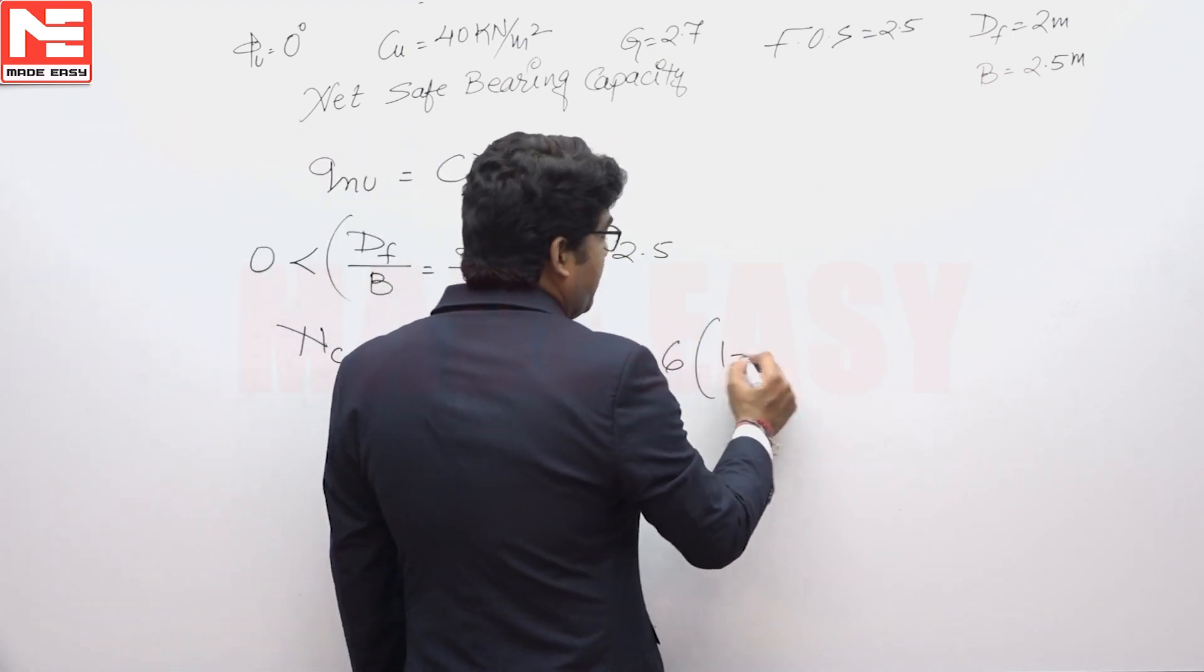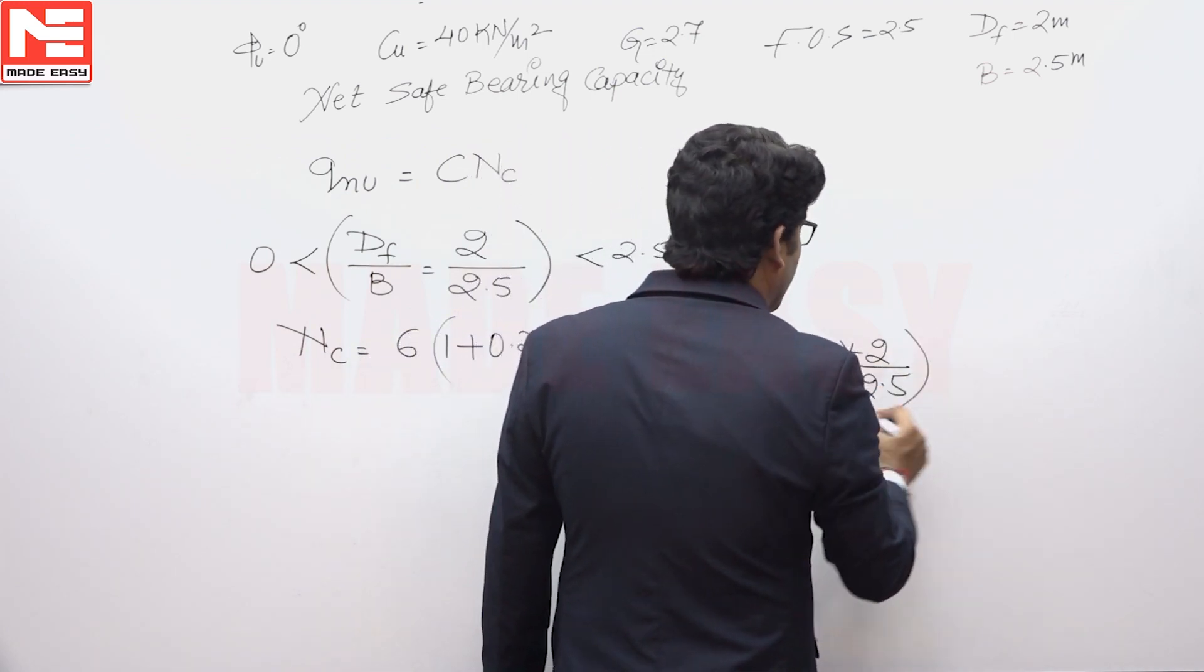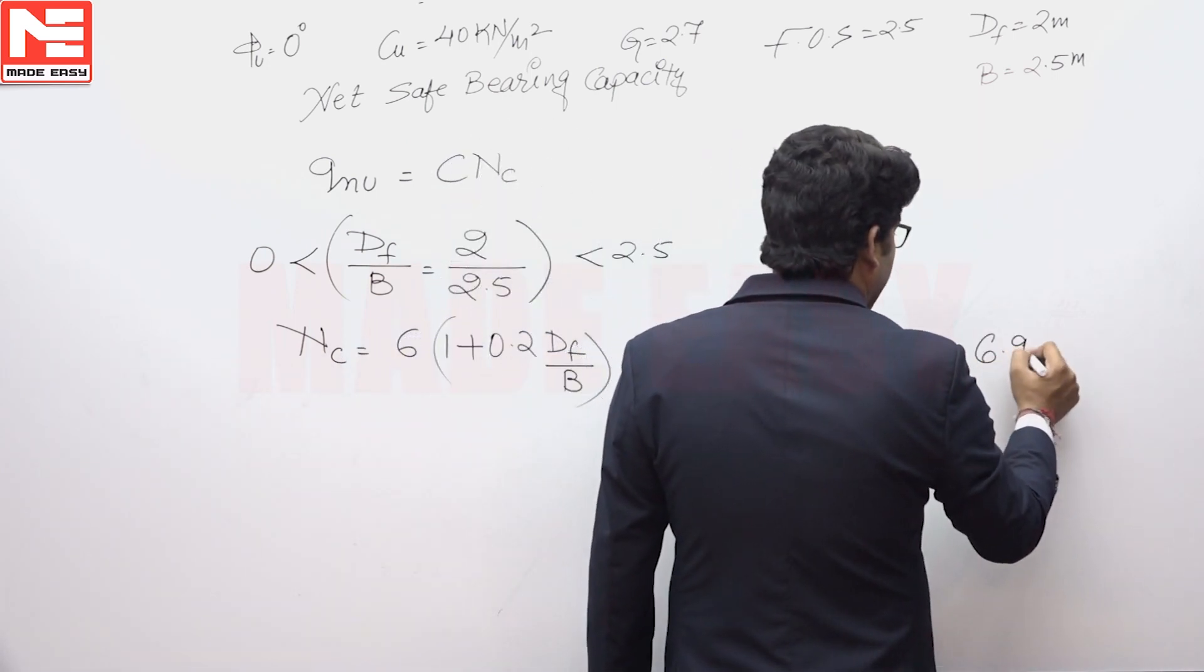This is equivalent to 6 times (1 plus 0.2 times 2 divided by 2.5). So this NC value is equivalent to 6.96.